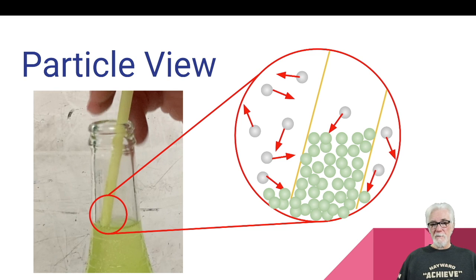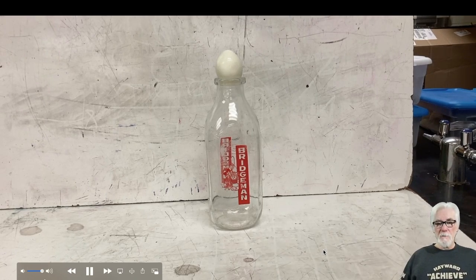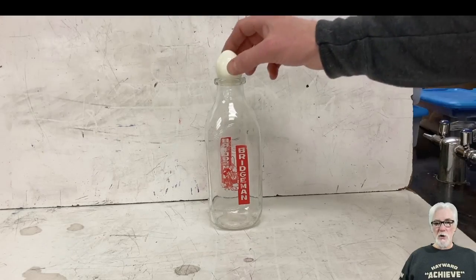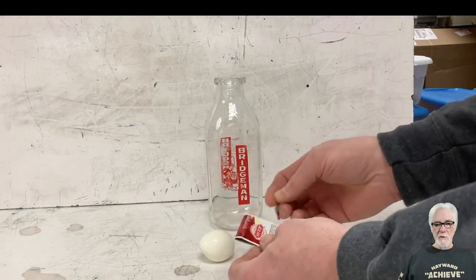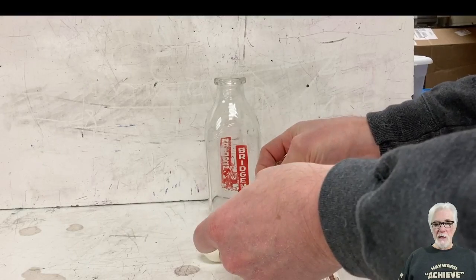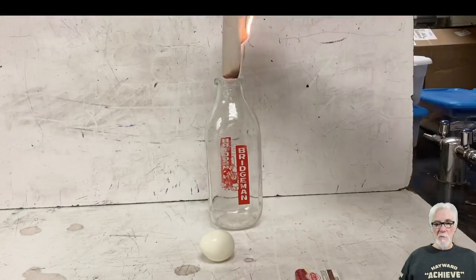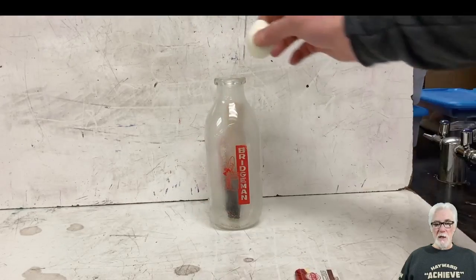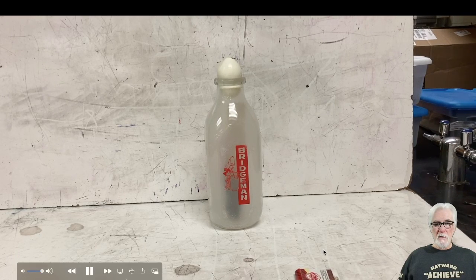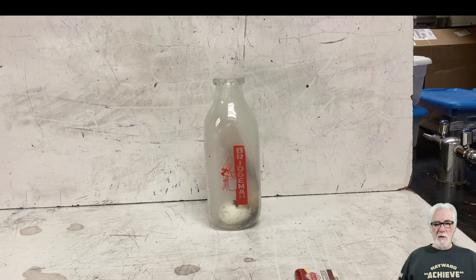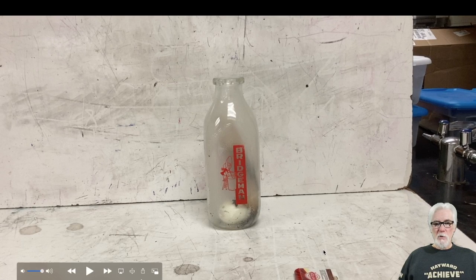Let's take a look at another phenomenon — this one's not as common. Here I have an old-fashioned milk bottle, and I have a hard-boiled egg that's been peeled sitting in the opening. You can see the opening is too small to allow the egg to fall in. I'm taking the egg off, lighting a strip of rolled-up paper towel on fire, and dropping it inside the bottle. I'll put the egg on the opening after the fire begins to go out. And you can see that egg that didn't fit through the opening now gets pushed into the bottle.